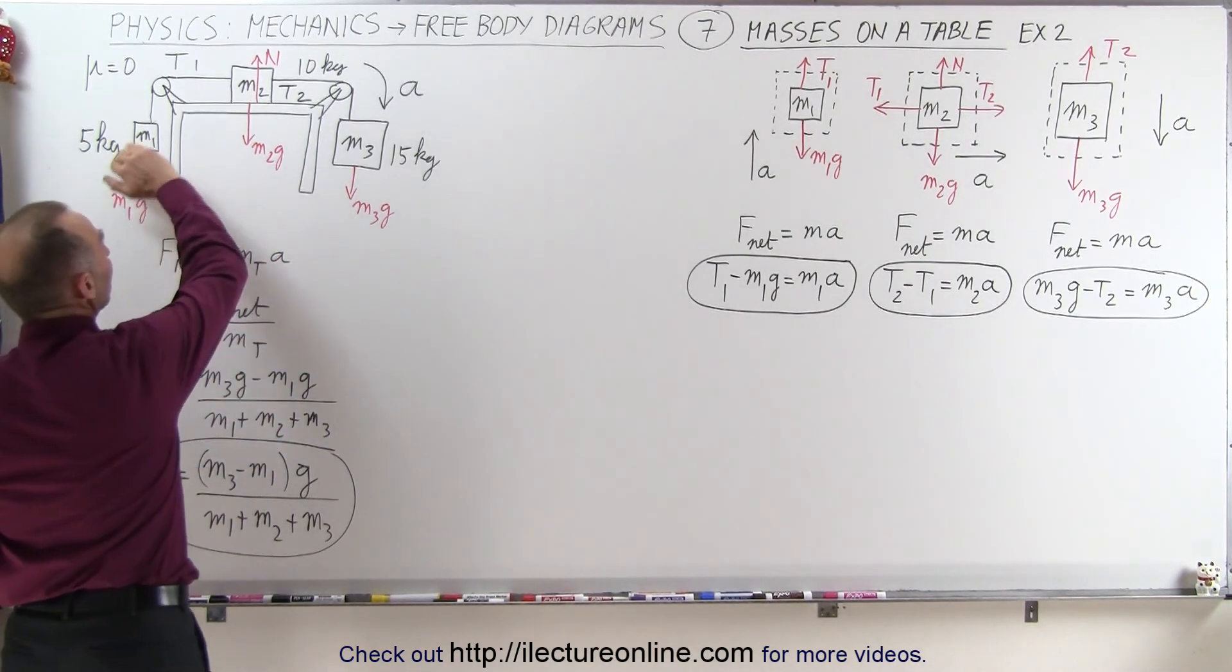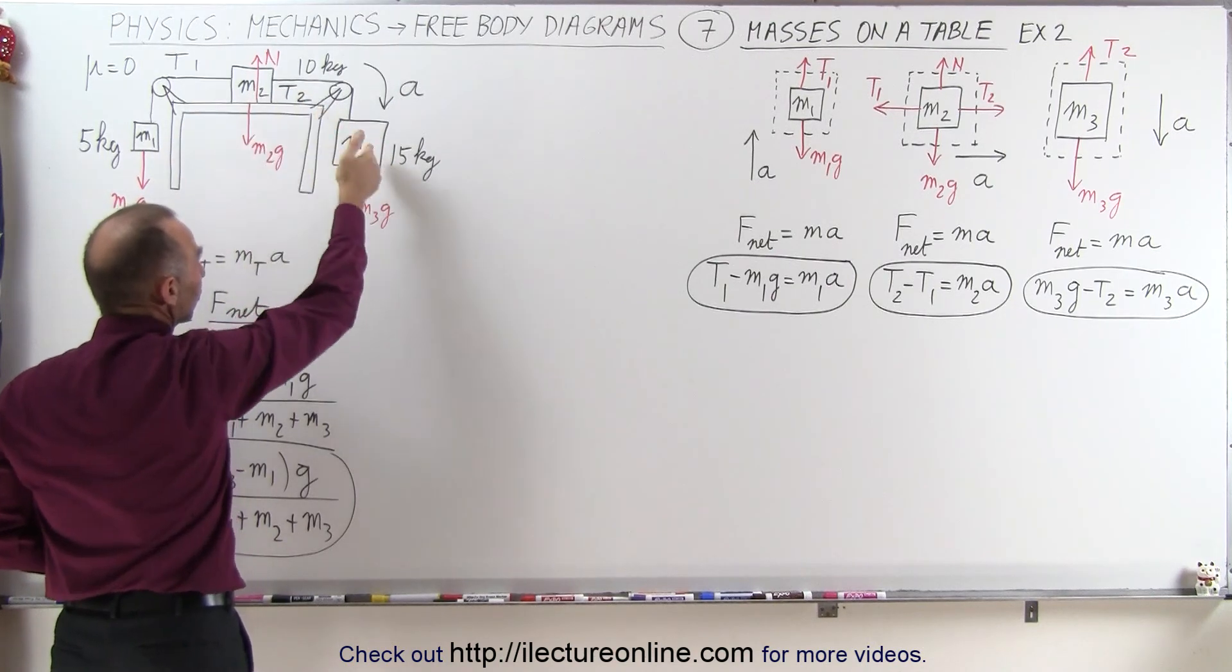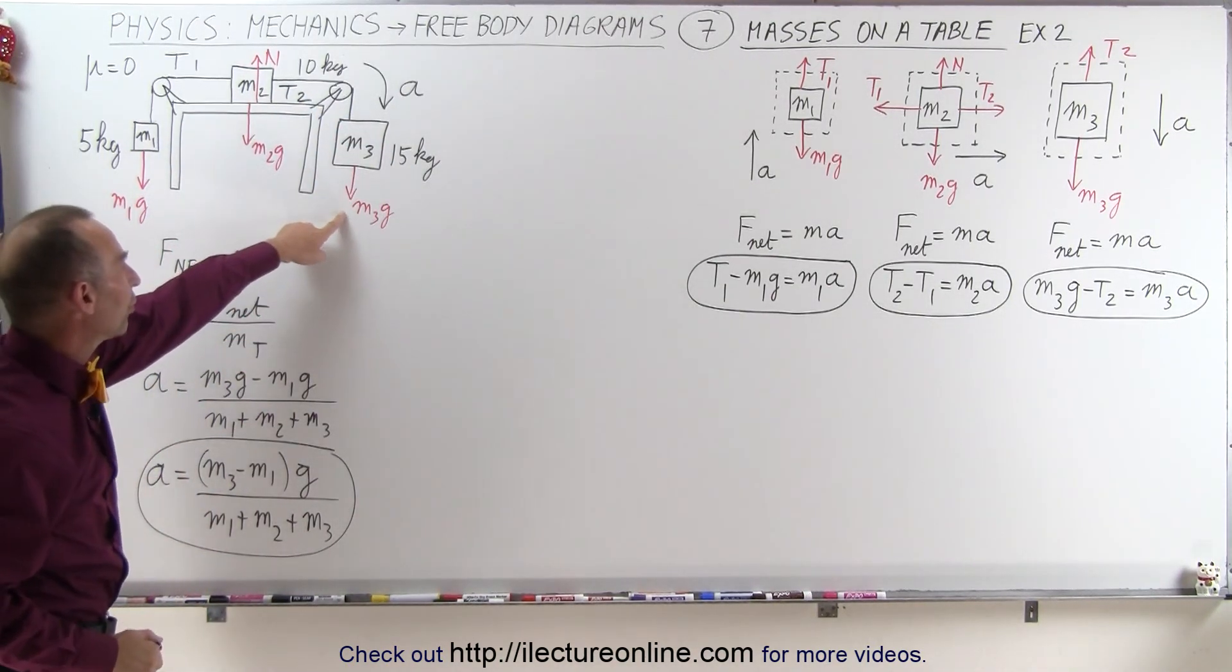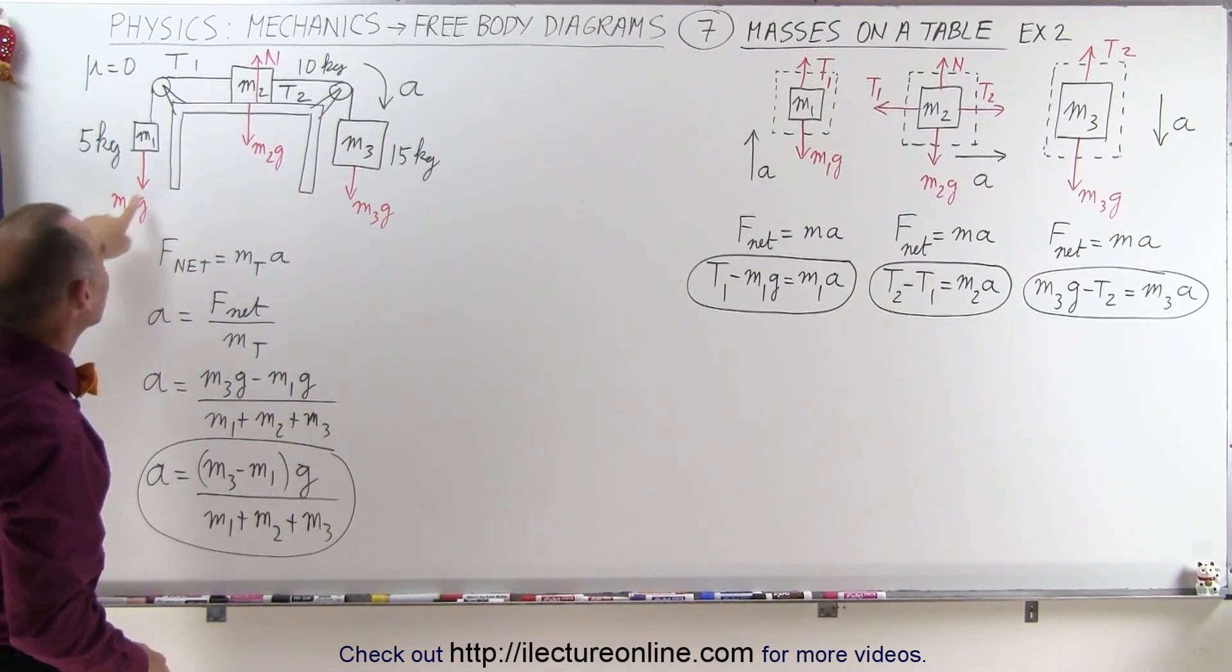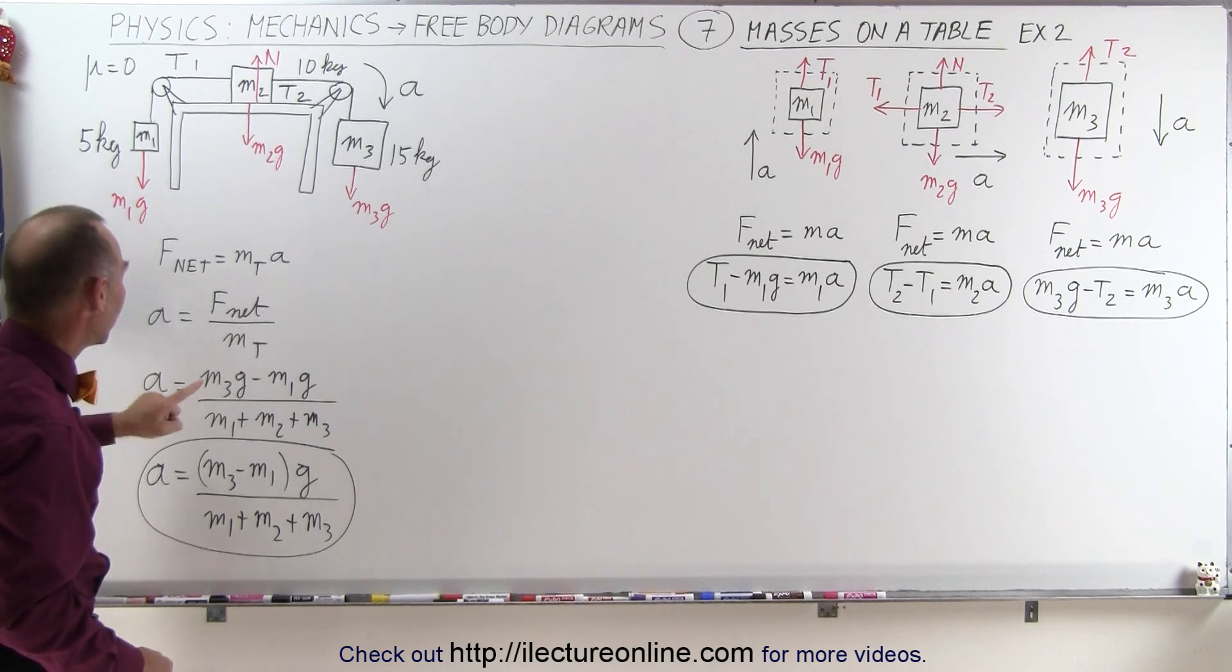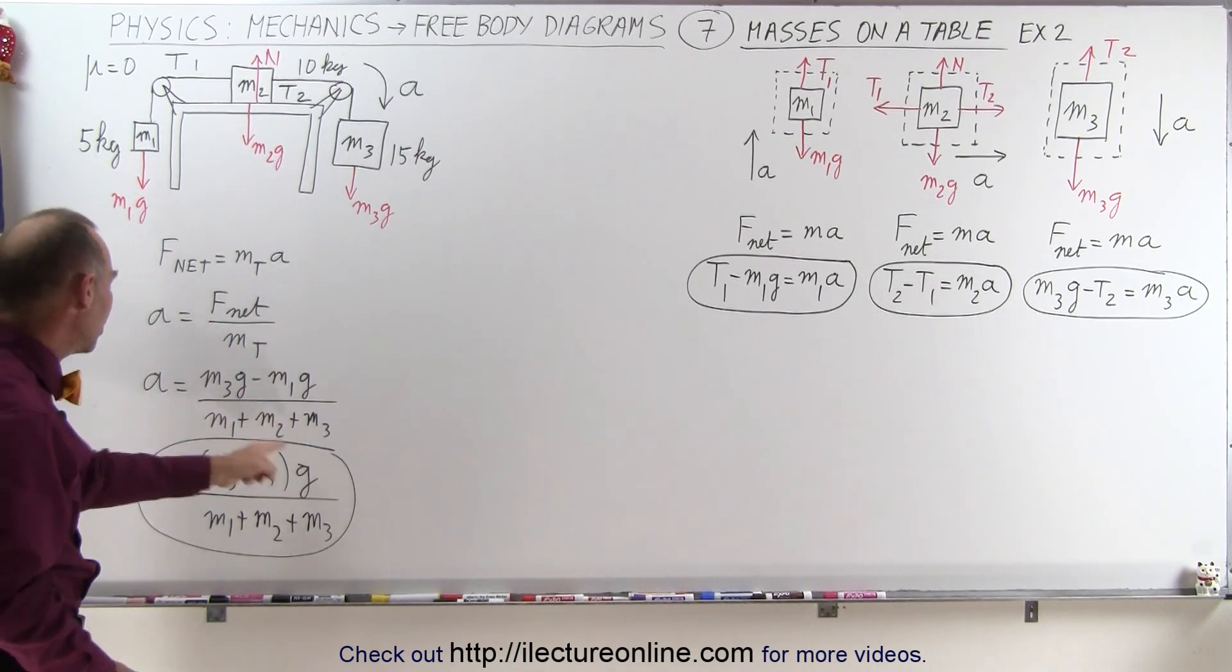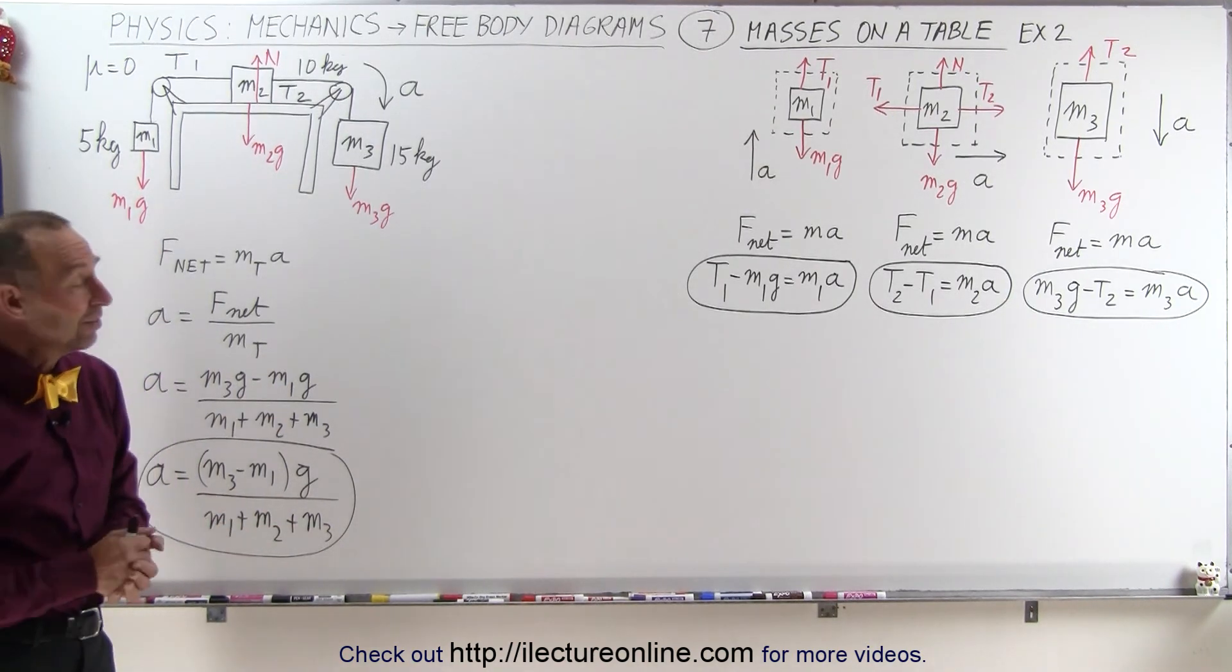We're assuming that the acceleration will be like this because this is the biggest block. We're assuming it's going to pull all the other blocks in that direction. So we can say that this is the force aiding the acceleration and this is the force opposing the acceleration, and those two forces cancel each other out. So we have m3g minus m1g for the net force divided by the total mass, the sum of the three masses. When we factor out a g we have an expression for the acceleration of the system. Pretty easy that way.